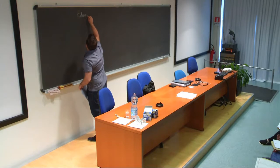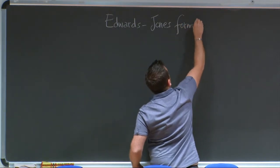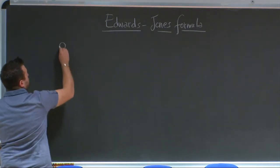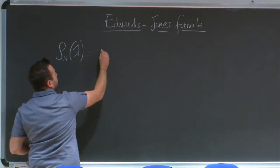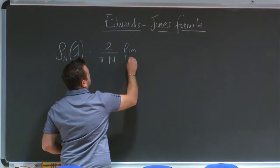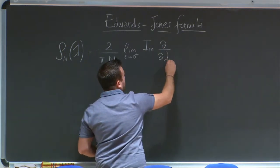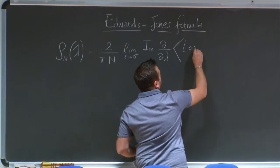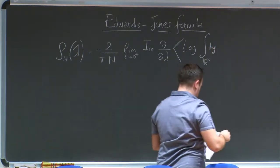I recall the Edwards-Jones formula. This is a formula that connects the average density of eigenvalues for a generic random matrix model with real eigenvalues. It is a long expression, but in essence it amounts to the Sokhotski-Plemelj formula and a suitable representation of a sum of complex logarithms in terms of an n-fold integral. So I write it in its full splendor.